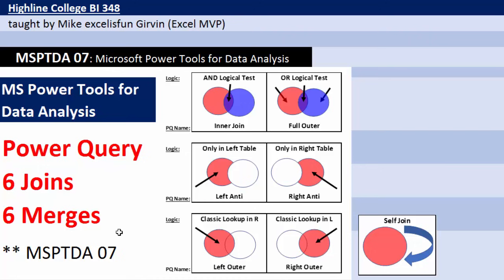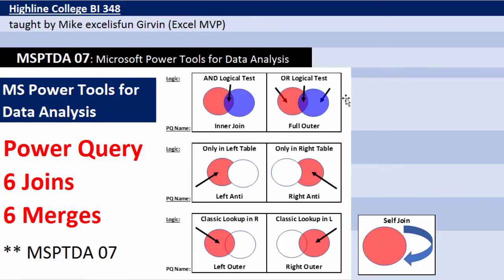The merge part of this means we will take the result — meaning, is there overlap — and deliver a merged table. In each one of these cases, we're taking two tables and doing some sort of join to get some sort of merged result.